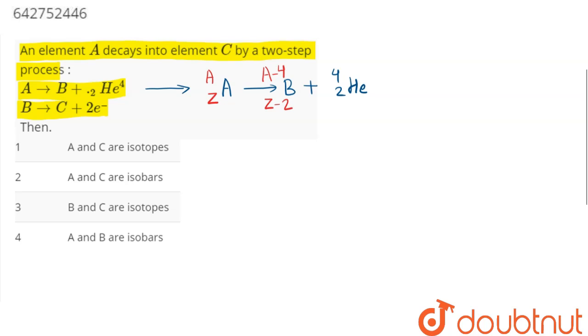In similar manner, if we consider this reaction, B giving C plus, let's say 2 beta minus, that is 2 electrons.